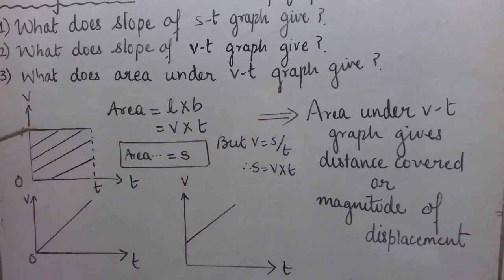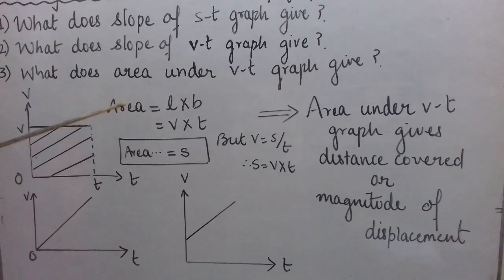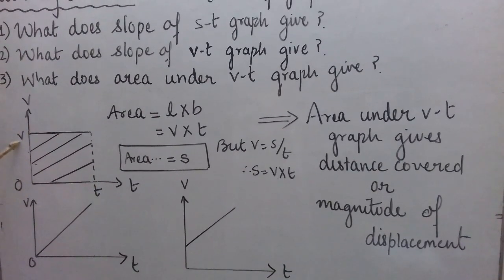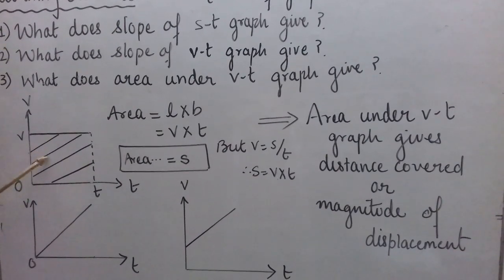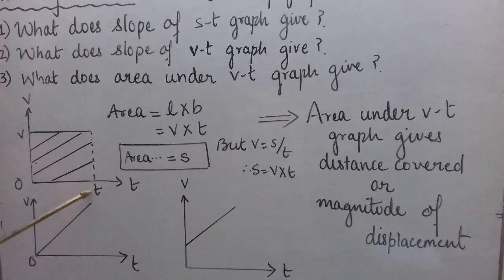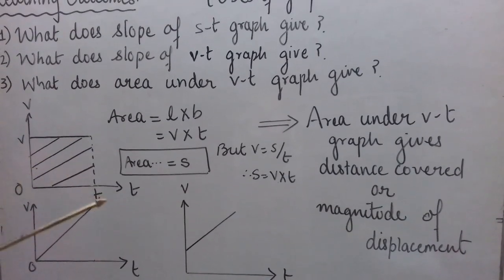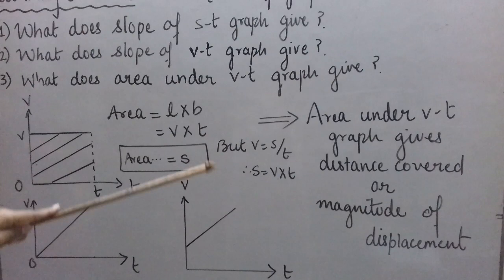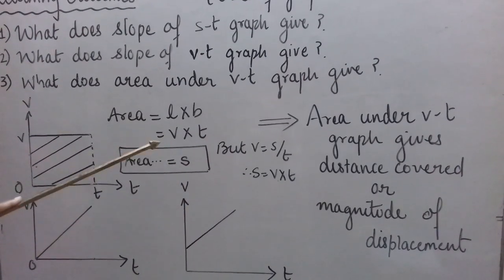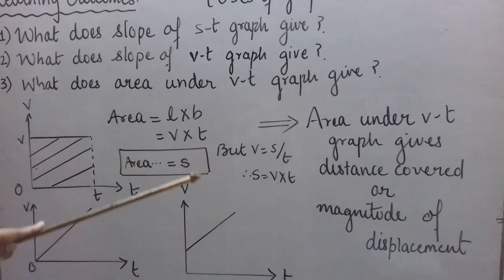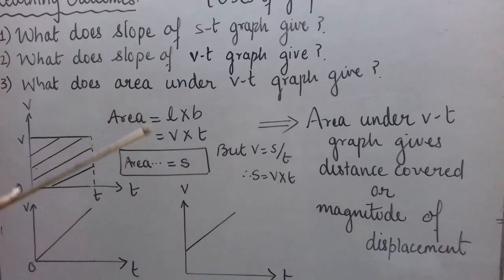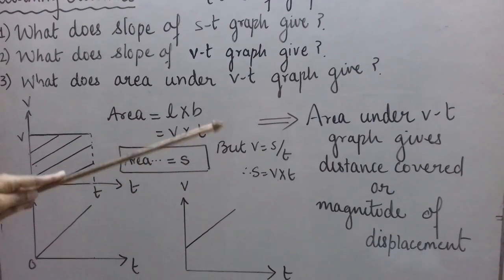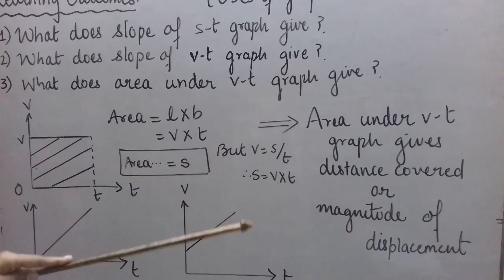This shaded region is a rectangle, and its area = length × breadth = V × T. We know that speed V = distance / time, so distance S = V × T. Here the area is also V × T, which means the area under the VT graph gives us S — the distance covered or magnitude of displacement. We can also take just part of the area to find distance covered in any chosen time interval.